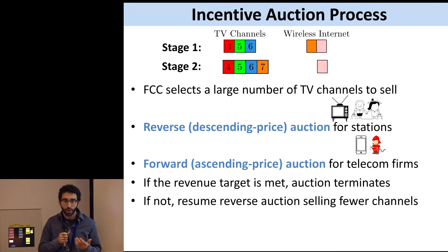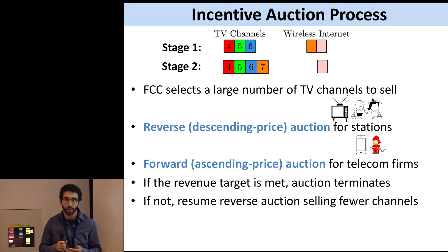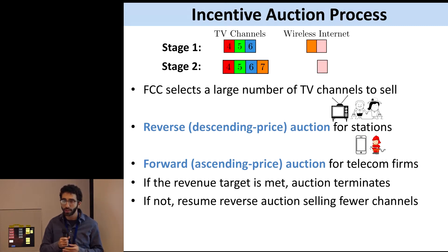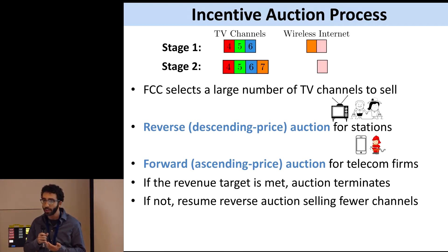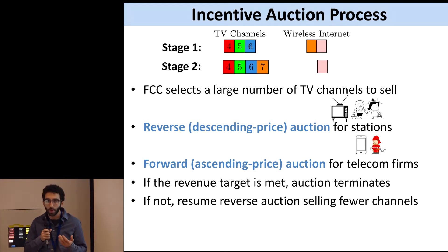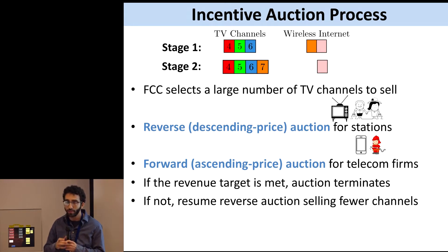This auction works exactly like the contrived airplane example. The FCC starts by selecting some large number of channels to sell, then runs a reverse auction for TV stations to determine which stations to buy and at what prices — exactly like the passenger auction. There's then a forward auction for telecom firms to determine how much they'll pay for that number of channels. If the forward auction can cover the cost of the reverse auction, the auction stops; if it can't, you go back selling fewer channels.